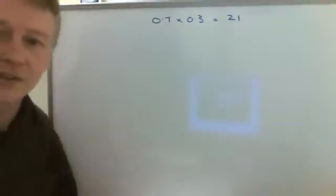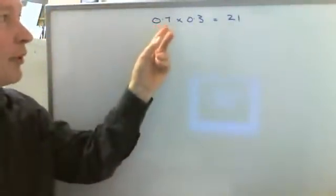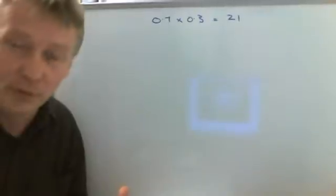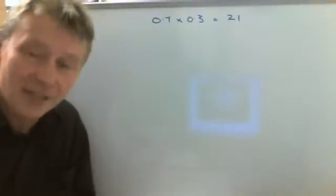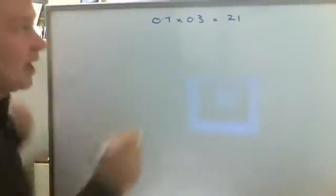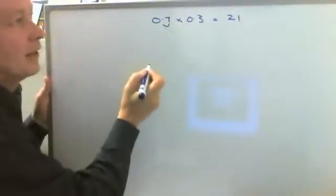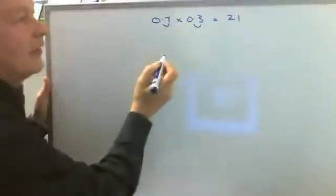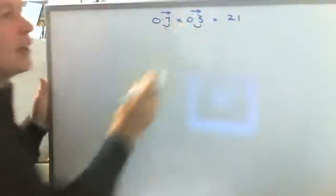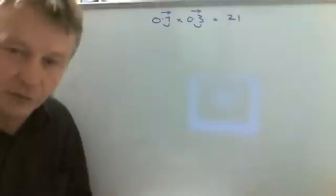However, the problem I have is that it's 0.7 multiplied by 0.3. In other words, the decimal point has moved once in this number and once in that number, and with both of those it's moved once towards the right.